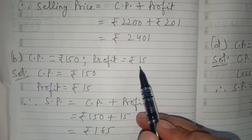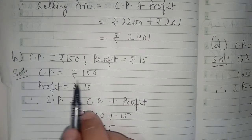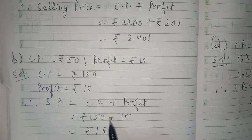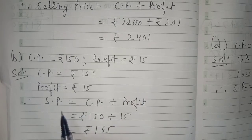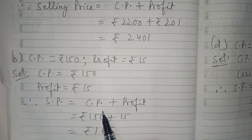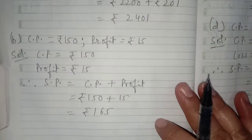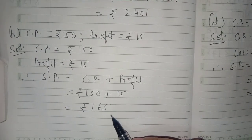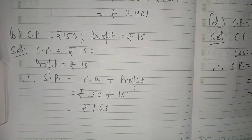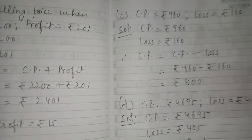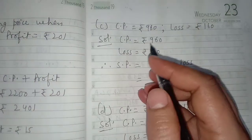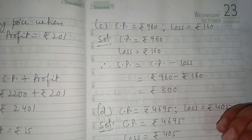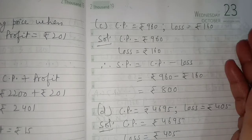Part b: CP is rupees 150 and profit is rupees 15. Writing the values, in case of profit SP equals CP plus profit. Putting the values and solving, the answer is rupees 165.